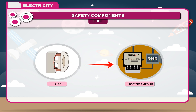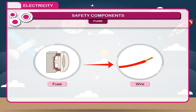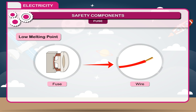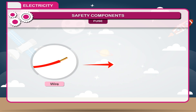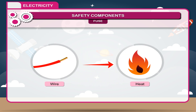An electric fuse is a safety device used to limit the current in an electric circuit. A fuse is a short piece of wire of uniform cross-section and high resistance, made of a material with a low melting point, so that it may melt due to overheating when current exceeding the prescribed limit passes through it.